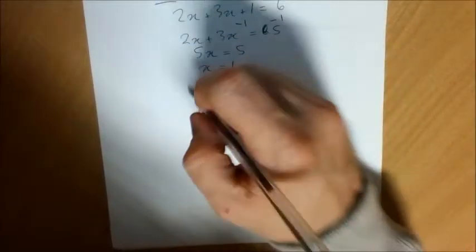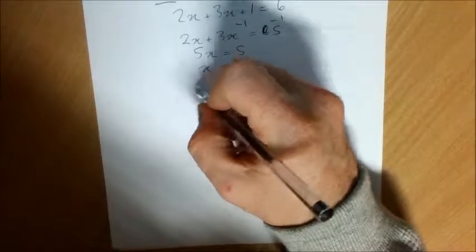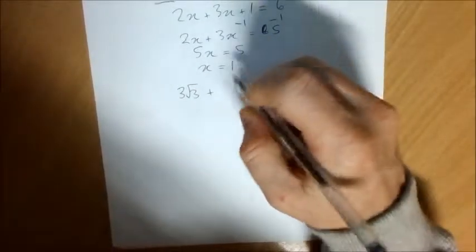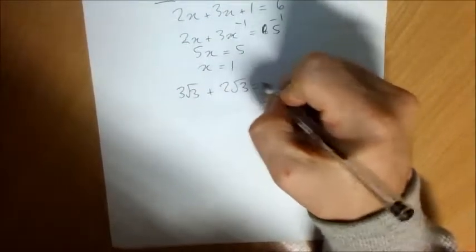Like terms are not just in algebra, and they can be in surds as well. So 3 root 3 plus 2 root 3 is 5 root 3.